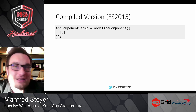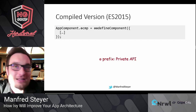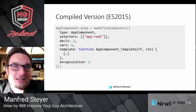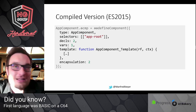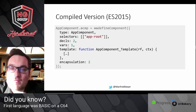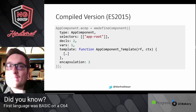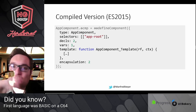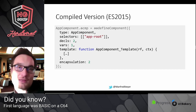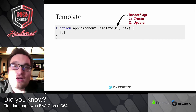The most important property is the component definition, which holds a lot of data about the component. It starts with a prefix that looks a bit like a Greek delta, and this prefix tells you that we are dealing with private APIs. If you look into this metadata, you will find the type of the component, the selectors, and a template function. This template function is basically your HTML template compiled by Ivy into JavaScript.